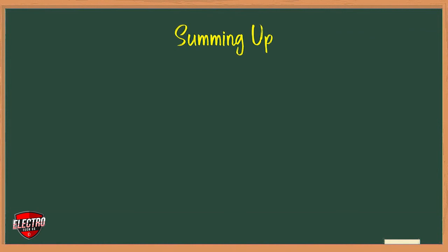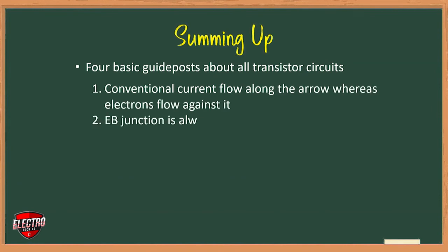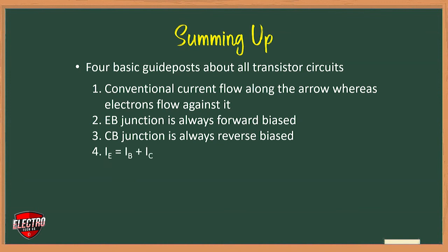So in this video we discussed four basic guideposts about all transistor circuits. First, conventional current flows along the arrow, whereas electron flow is against it. Emitter-base junction is always forward biased, and collector-base junction is always reverse biased. That means IE equals IB plus IC.